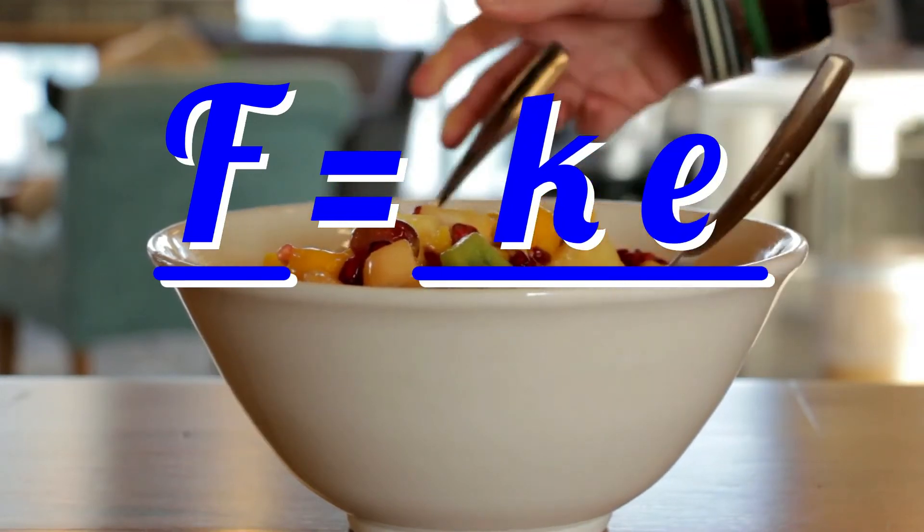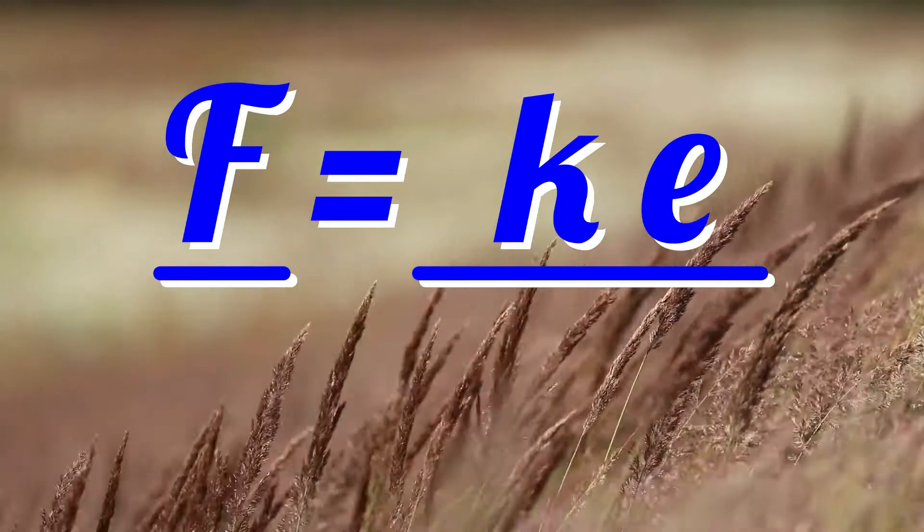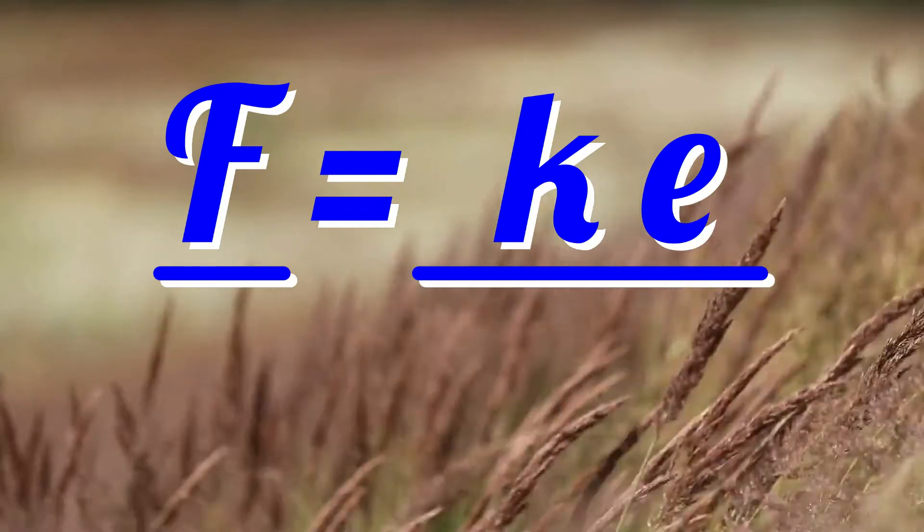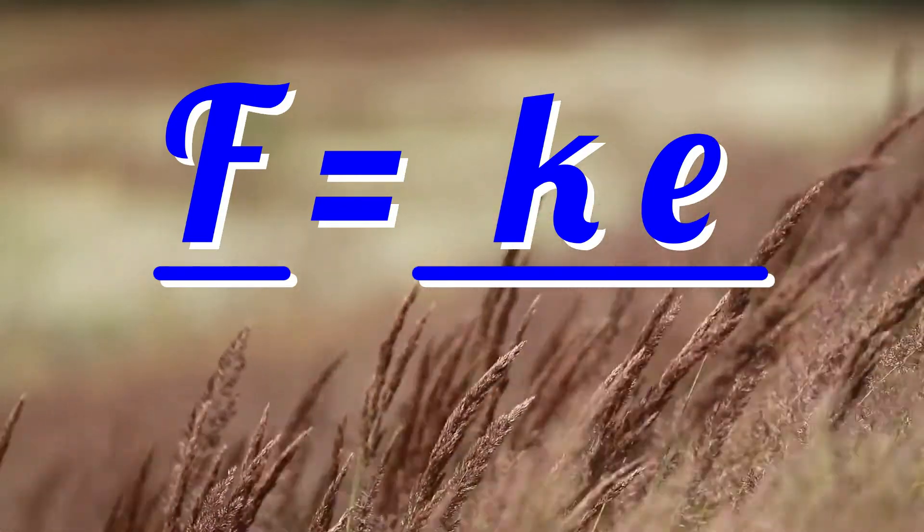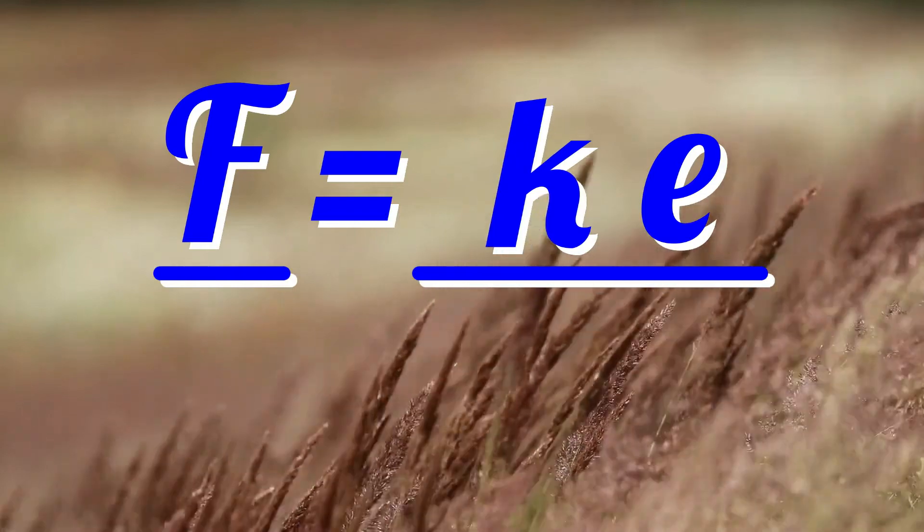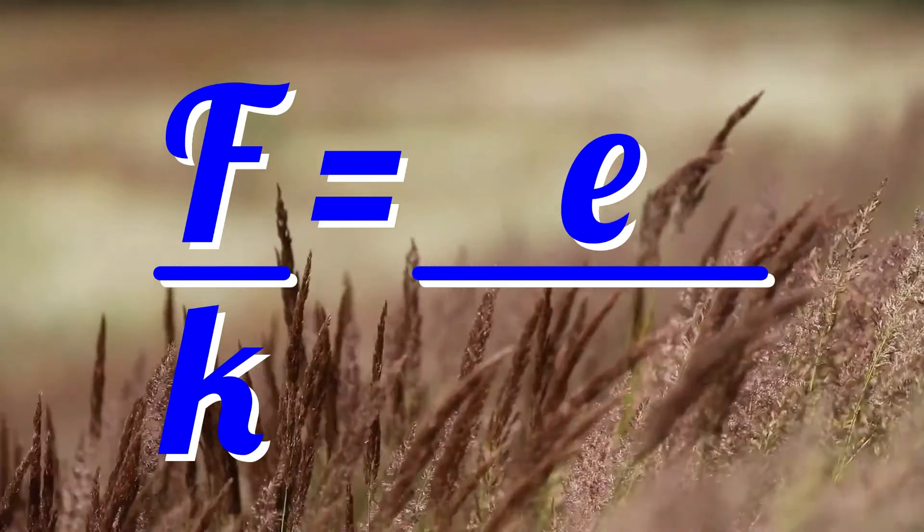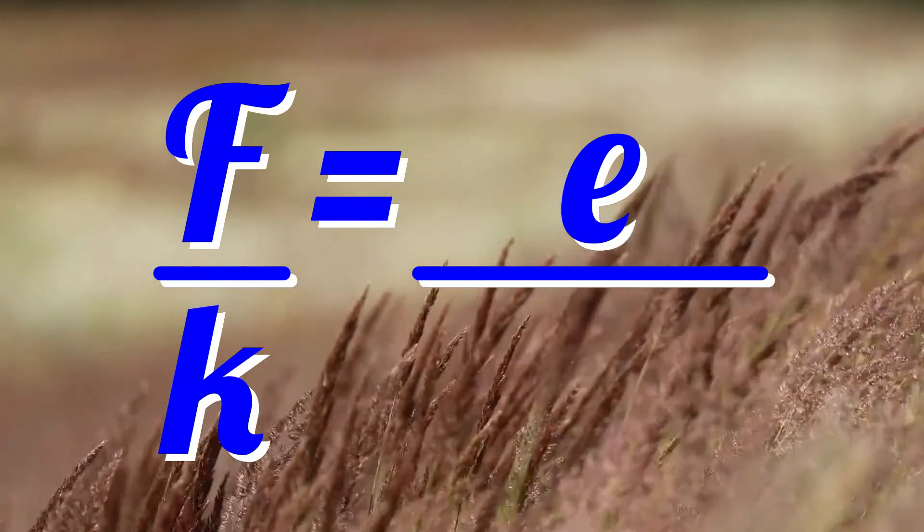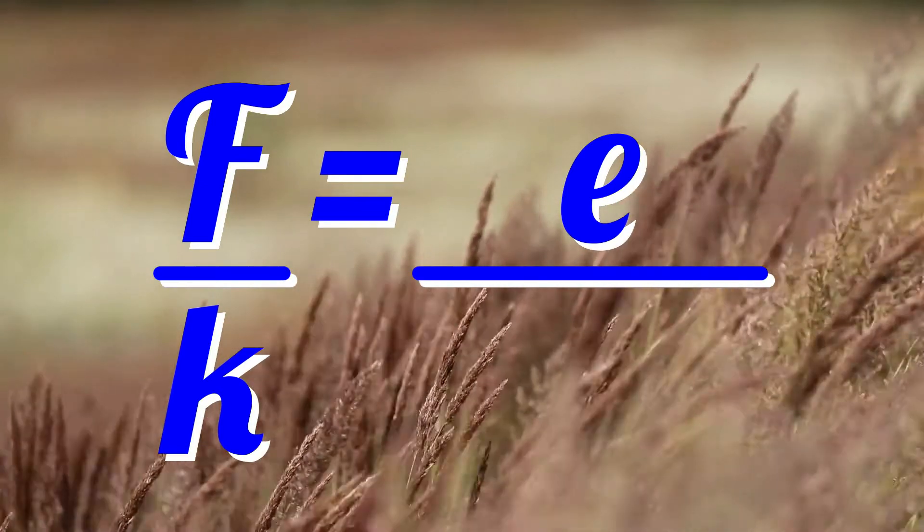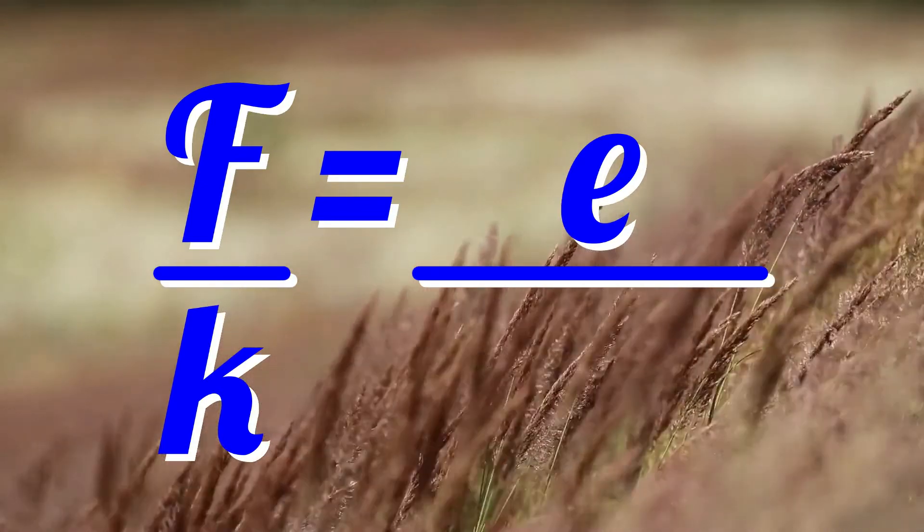To make the extension the subject of the equation, if you know the force and the spring constant, divide through by the spring constant. That is, move the k under the F. F over k equals e. Force divided by the spring constant equals the extension.